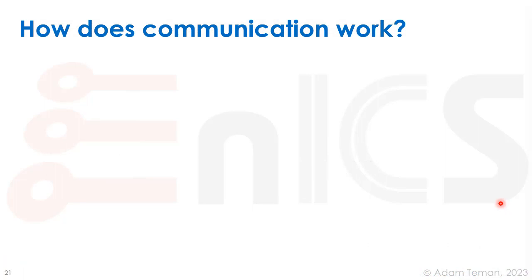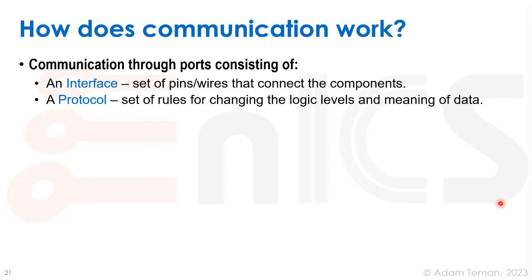How does communication work in general? We have two things: the interface and the protocol. The interface is the physical connection — the set of pins and wires that connect between the components, defining exactly which signals make up the bus. The protocol is a set of rules for changing the logic levels and meaning of data — the language that the different parts speak together, defining what happens first, what happens next, and what is allowed.